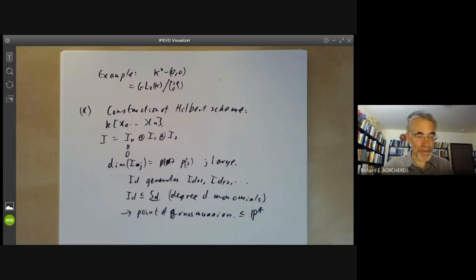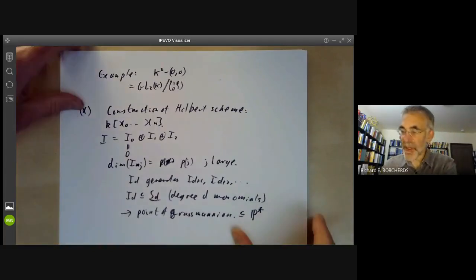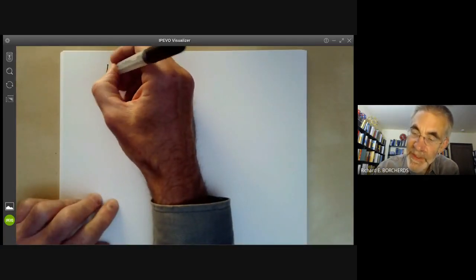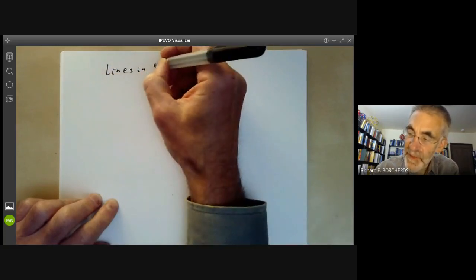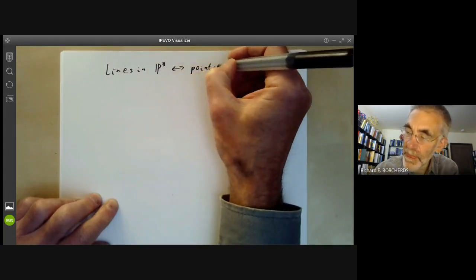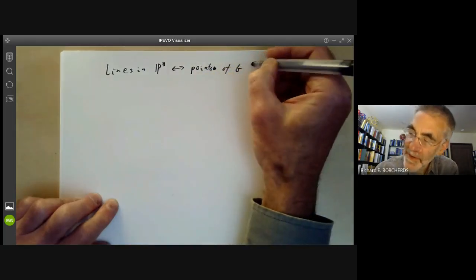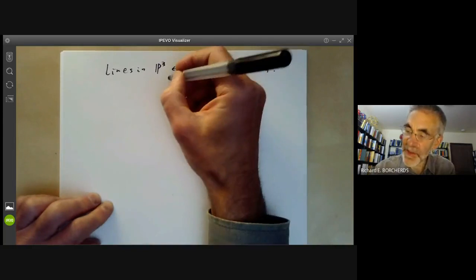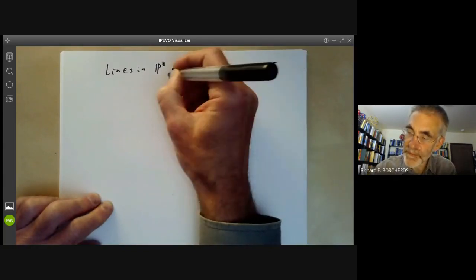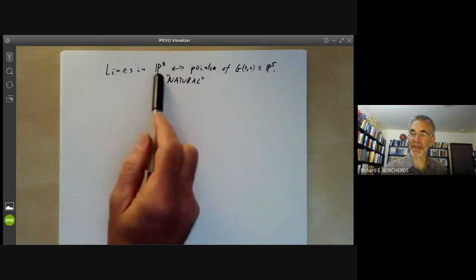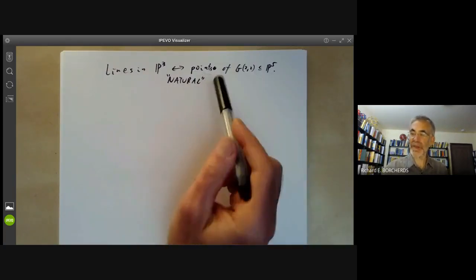And so the next question is, what does natural mean? So what we want to do is to say that the lines in three-dimensional projective space correspond to the points of a Grassmannian G22, which is a certain sub-variety in P5. And this correspondence is natural. And what do we mean by this? Notice that in some sense, it's trivial to find a variety whose points correspond to lines in P3. All we need to do is to take any variety with the same cardinality, and we get a one-to-one correspondence.